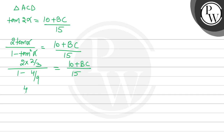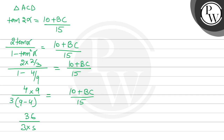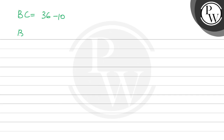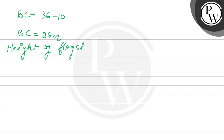So we get 4/3 upon (9 minus 4)/9, which equals 4/3 × 9/5 = 36/15 = 12/5. Therefore 12/5 equals 10 + BC upon 15. Multiplying both sides by 15 gives 36 = 10 + BC, so BC = 26 meters.